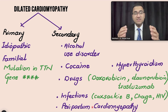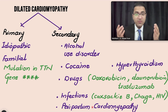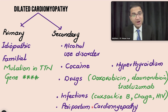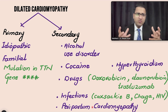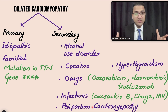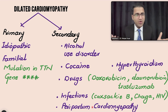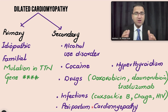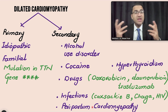Peripartum cardiomyopathy occurs in pregnant ladies in the last trimester or within six months after delivery, when patients develop signs and symptoms of overt heart failure. On echocardiography you find a dilated heart, with no prior cardiac history, no coronary artery disease, and no hypertension. Peripartum cardiomyopathy is therefore a secondary cause of dilated cardiomyopathy.